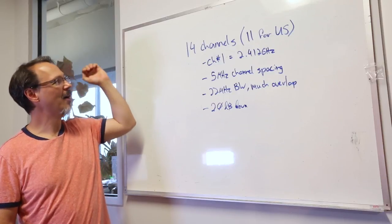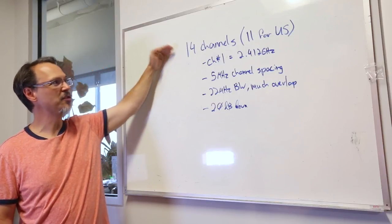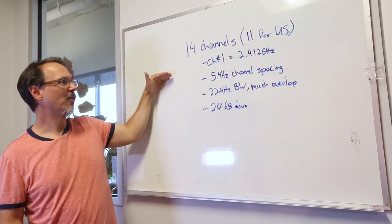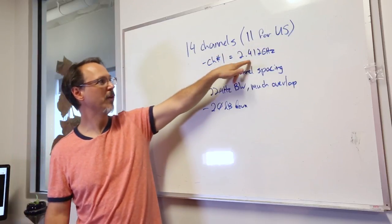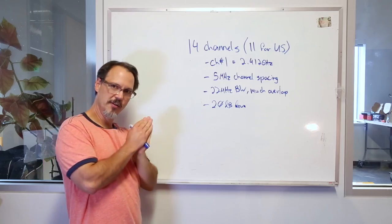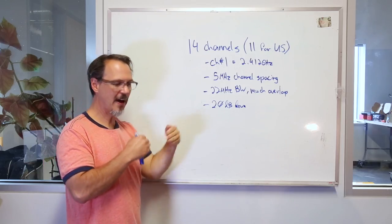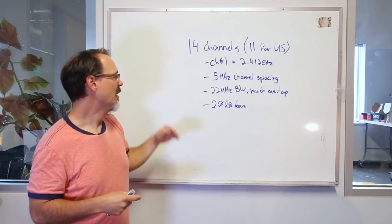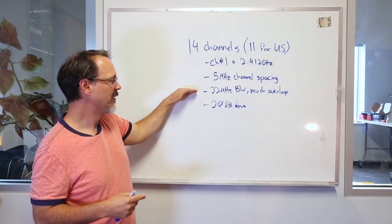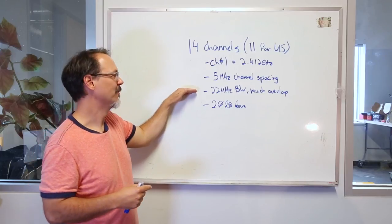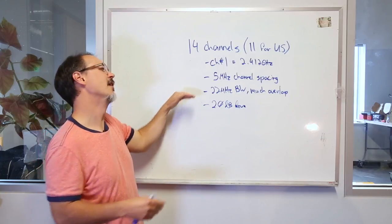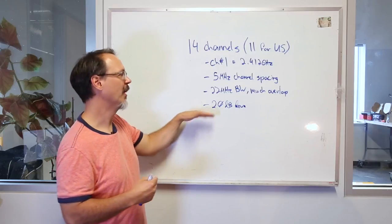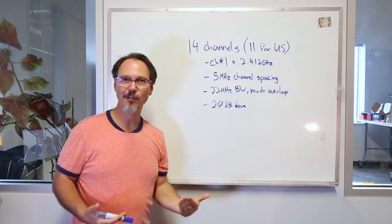For the 2.4 GHz spectrum, there are 14 channels officially. Only 11 of them are active in the United States. Channel 1 center frequency is at 2.412 GHz. The channels are spaced in 5 MHz increments up from 2.412 GHz. The channel bandwidth is 22 MHz. And when they define that, what they say is when you're 11 MHz out from your center frequency, you've got to be 20 dB down.